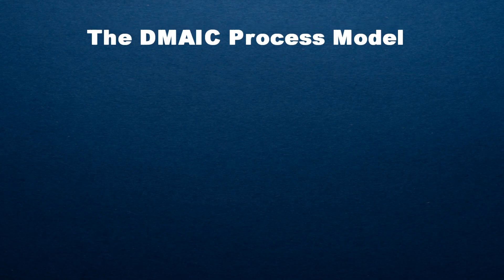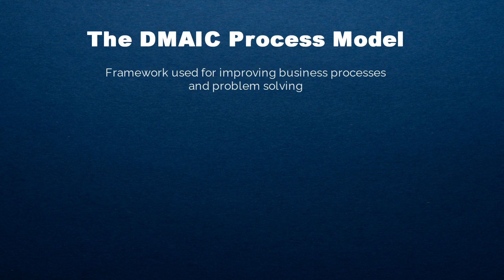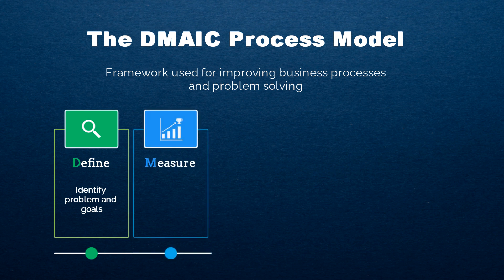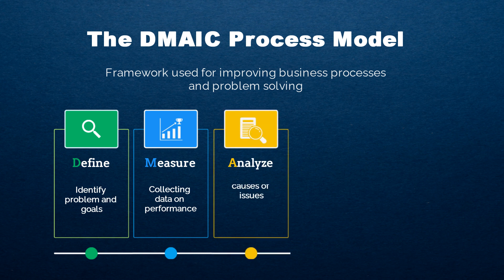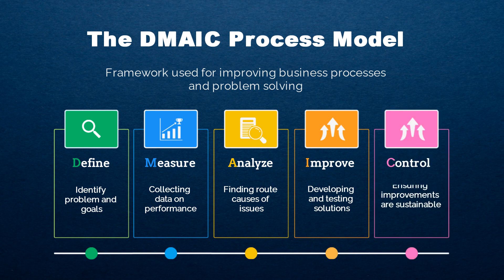The DMAIC process provides a straightforward framework for improving business processes and problem solving. The acronym DMAIC stands for five phases: Define, identifying the problem and goals; Measure, collecting data on current performance; Analyze, finding root causes of issues; Improve, developing and testing solutions; and Control, ensuring improvements are sustainable.